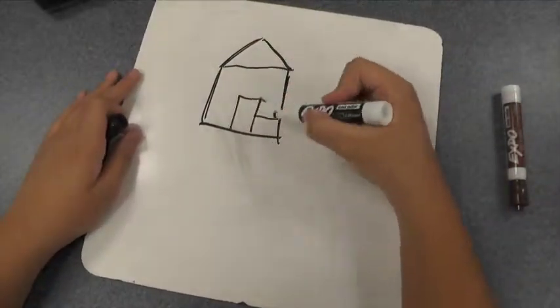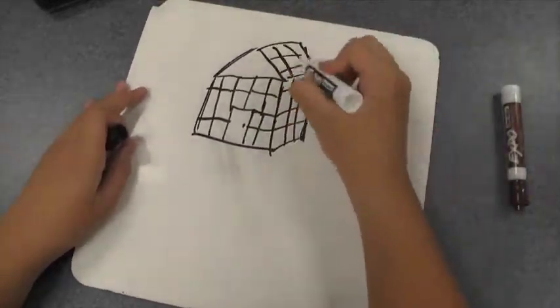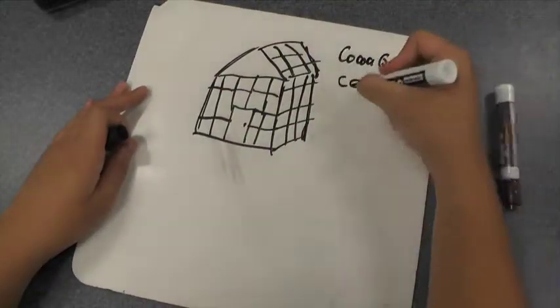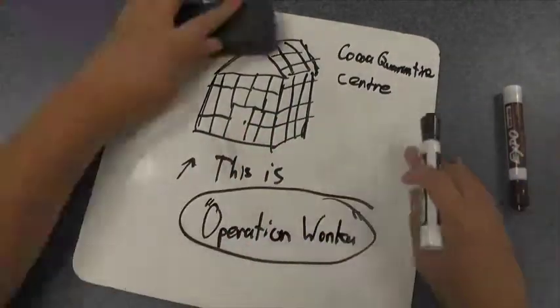Scientists in England are desperately trying to find a new way to grow chocolate. There is a cocoa quarantine center in Blackshire, England, nicknamed Operation Wonka.